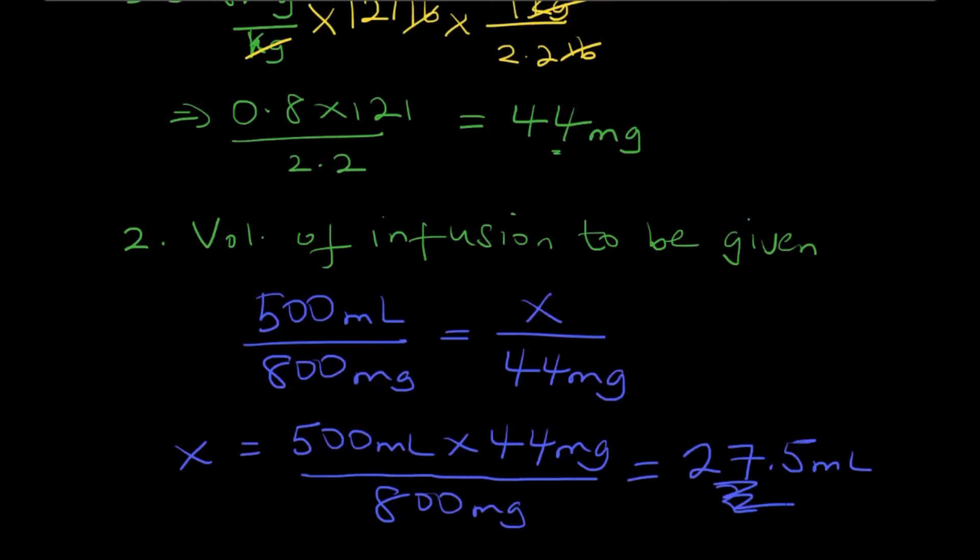So for this particular question, we're going to infuse 27.5 mL and that will give 44 milligrams of aminophylline. Very nicely and easily done.